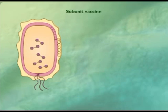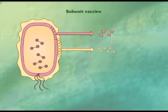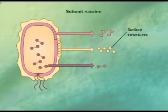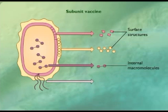Subunit or acellular vaccines consist of selected components from the pathogen, such as a surface structure, an internal macromolecule, or the flagellum.